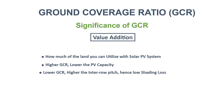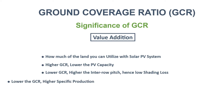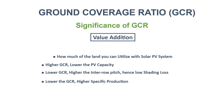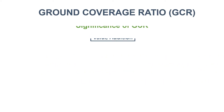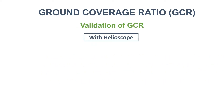Next, if you lower the GCR, that means you are increasing the inter-row pitch and hence the shading loss is decreasing. And last of all, by decreasing the GCR you are actually boosting up the system specific production.